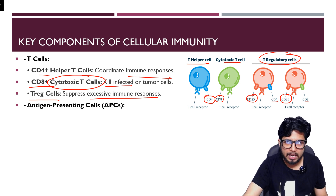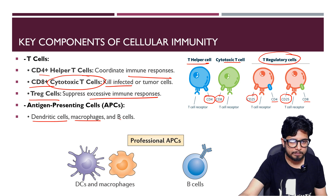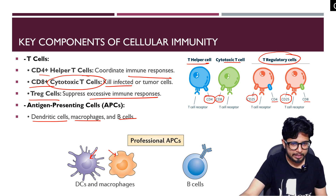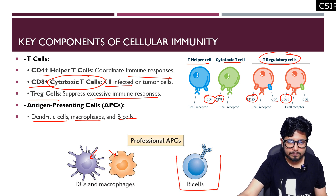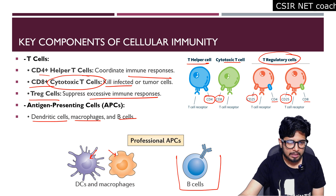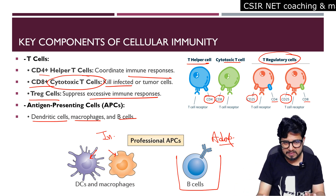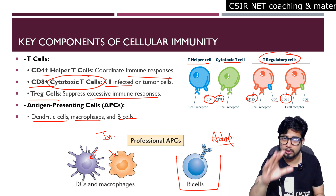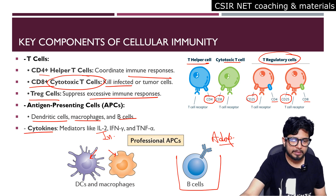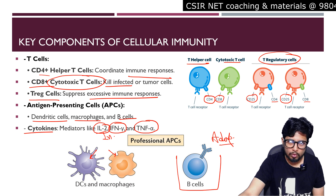Antigen-presenting cells are also part of cell-mediated immunity. These include dendritic cells, macrophages, and B cells. Dendritic cells and macrophages are already present and are part of the innate immune system, while B cells are part of the adaptive immune response. There are also cytokine mediators — interleukin-2, interferon-gamma, and tumor necrosis factor alpha — which play a vital role in cell-mediated immunity.